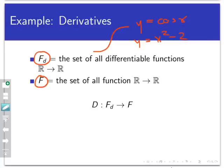F is the set of all functions, period, from the real numbers to the real numbers, including ones that are not always differentiable. For example, y equals absolute value of x is not differentiable at all points, but I would include that in the set F.